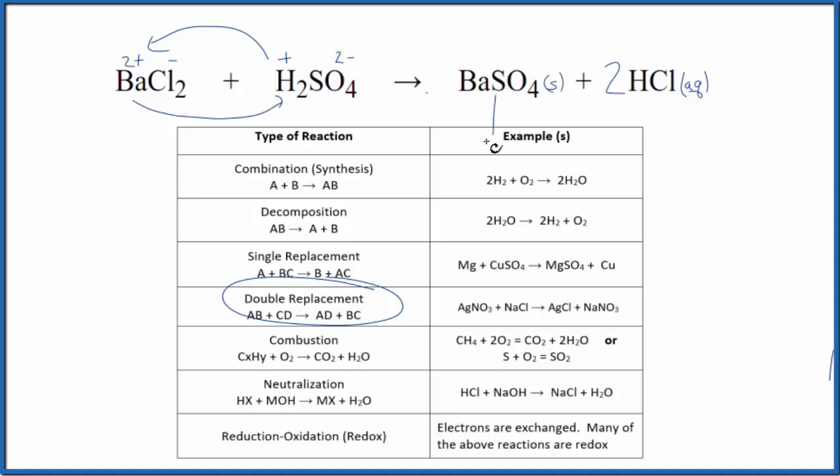So it's a double displacement reaction, but sometimes you'll hear this called a precipitation reaction as well because the barium sulfate is falling to the bottom of the test tube.